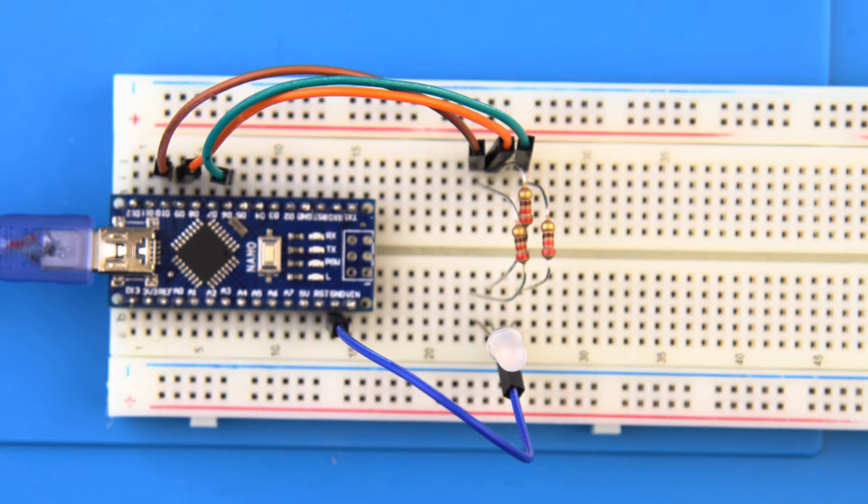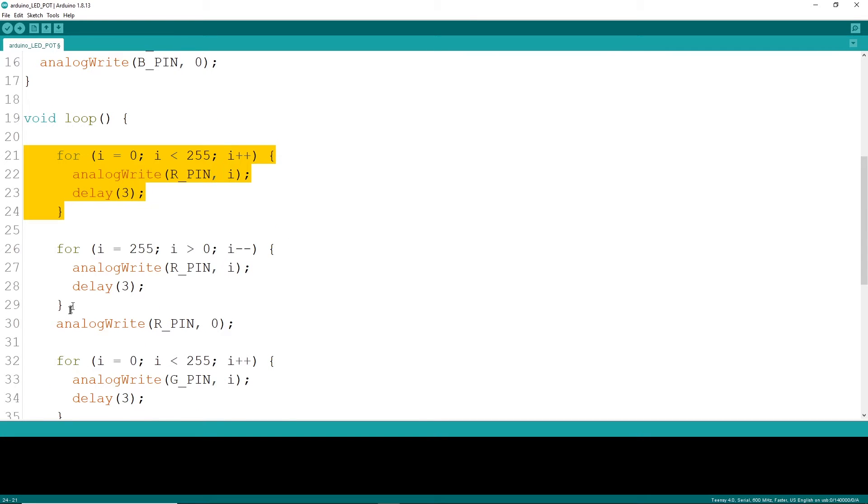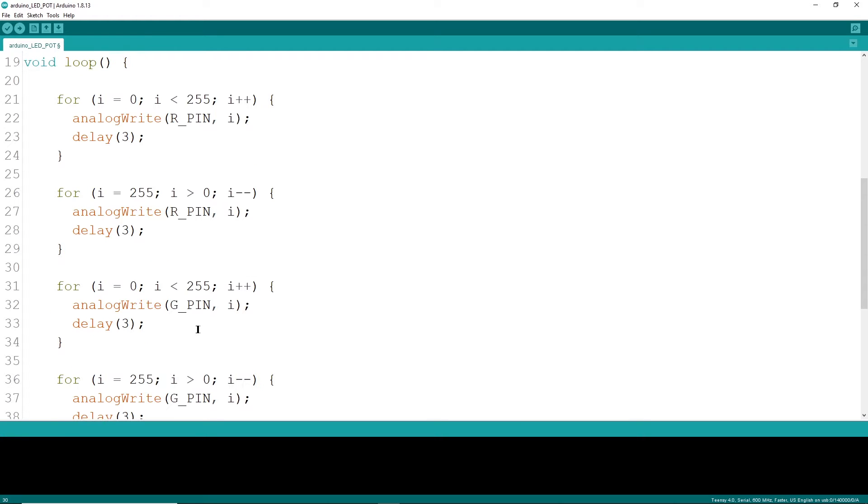To pulse each LED, we'll write a simple loop. Unlike the 10-bit analog read, analog write is only 8 bits, so the maximum output value is 255. One loop for each color will be used and we'll keep it simple and pulse them individually.